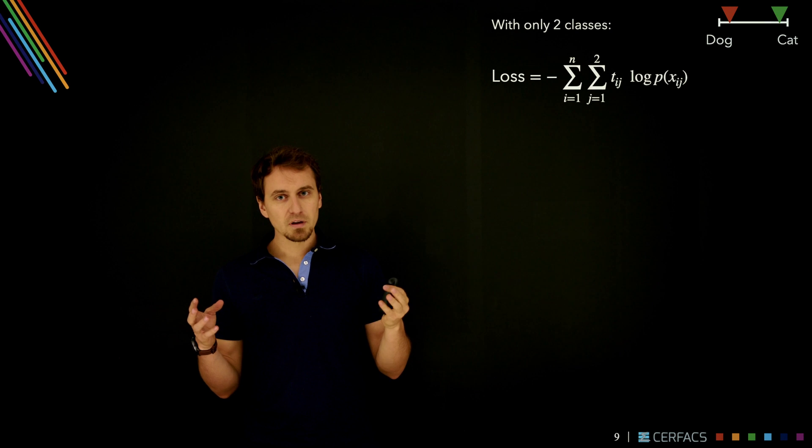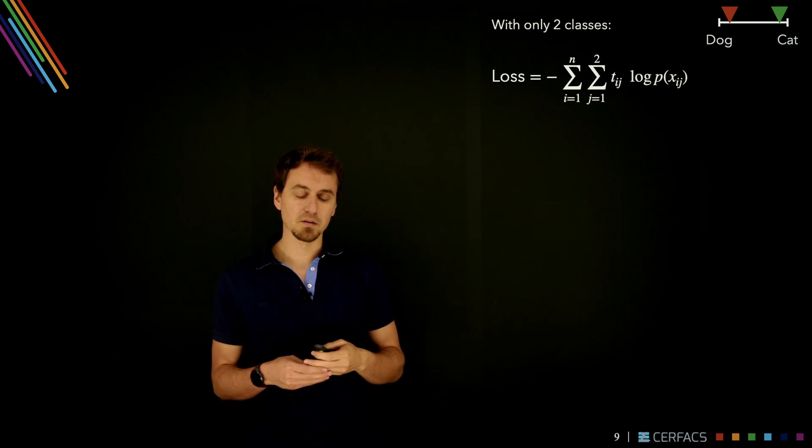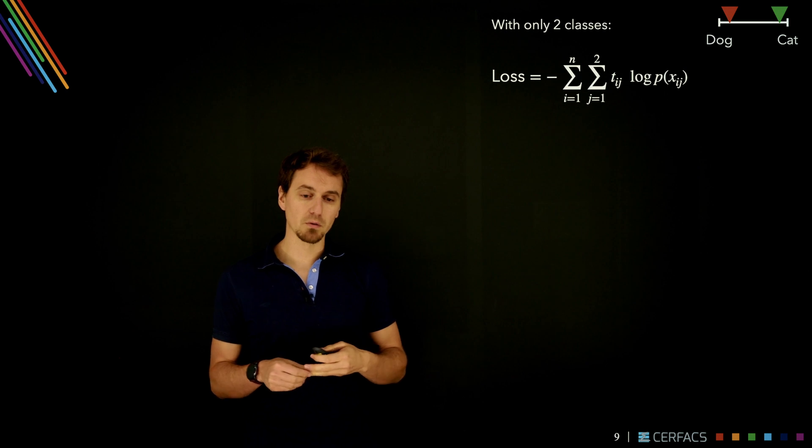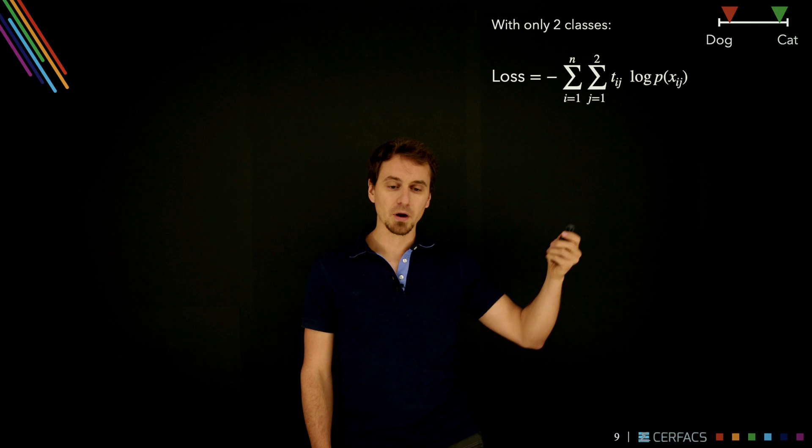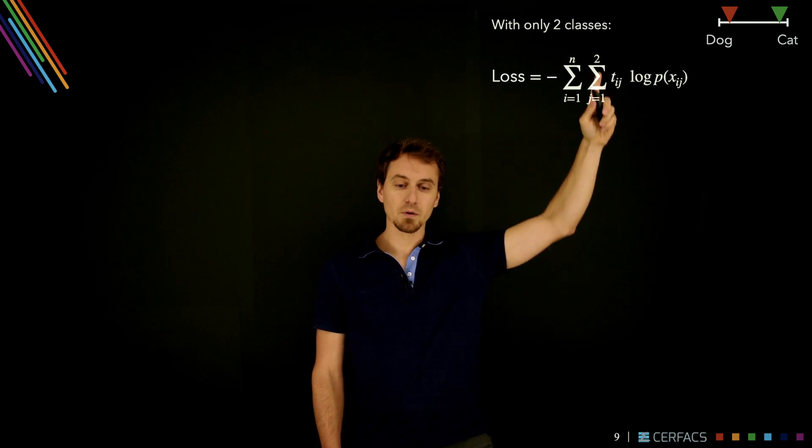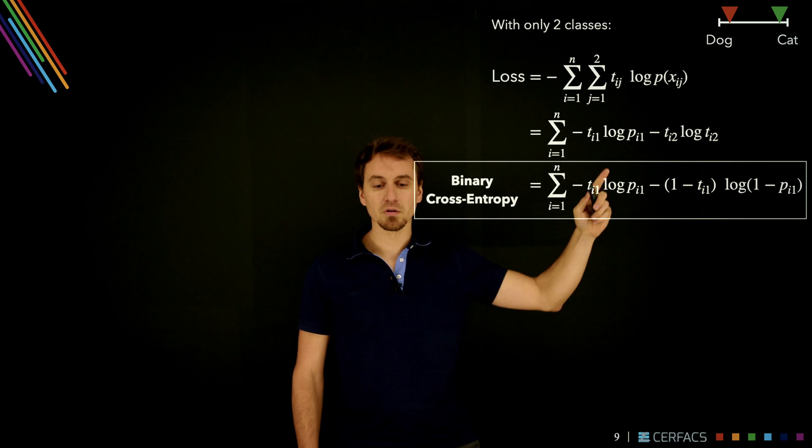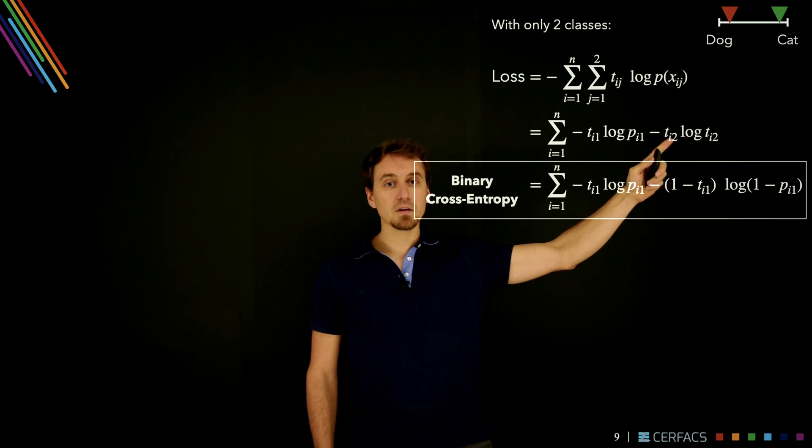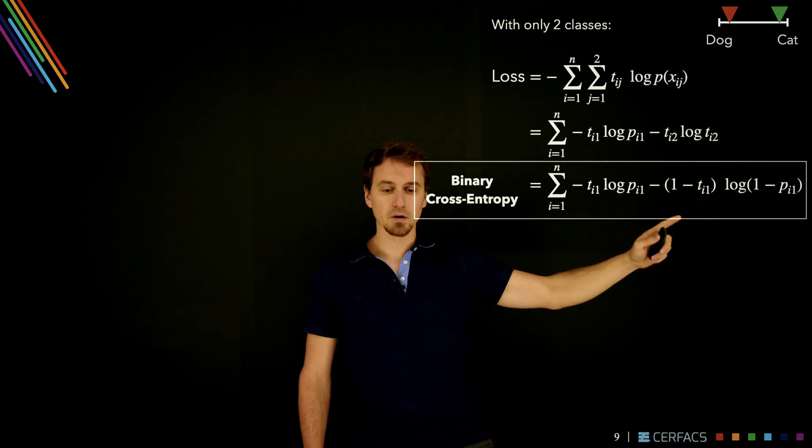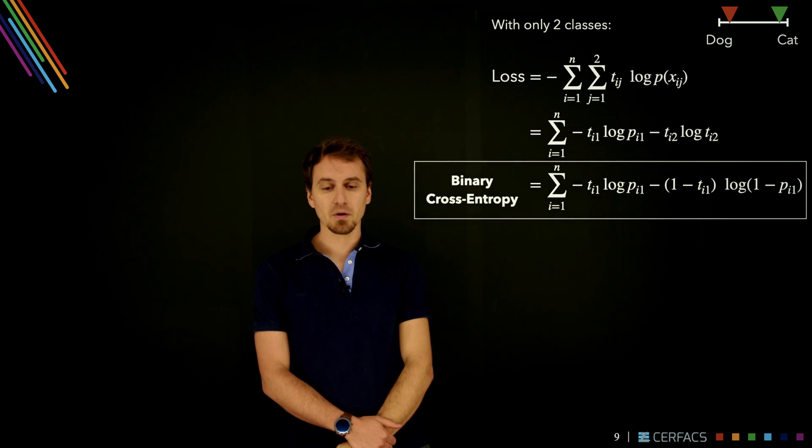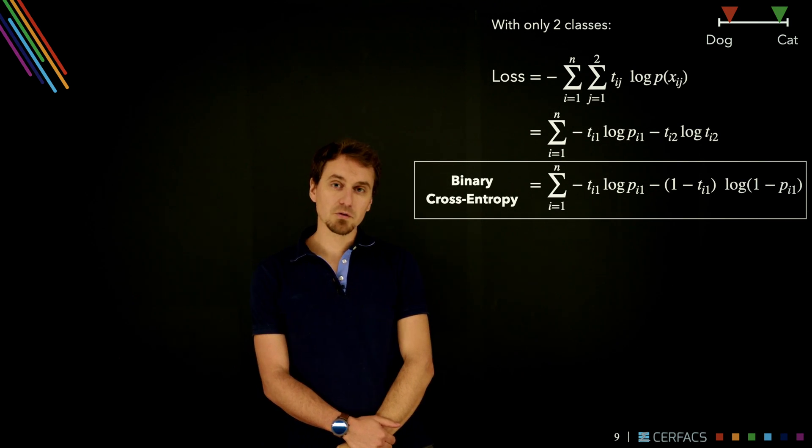This is actually easy to derive in the case of two-class classification, so binary classification. We can directly write the whole thing out, and it takes a very typical form. I just replaced in this equation the k by 2 because I have two classes. But t_2 is actually 1 minus t_1 because there are only two possible outcomes. So I can replace that in the equation and I get this shape. This is known as binary cross-entropy.